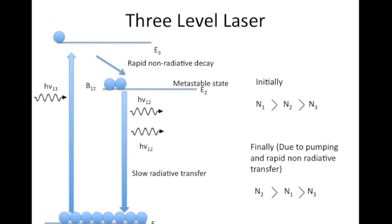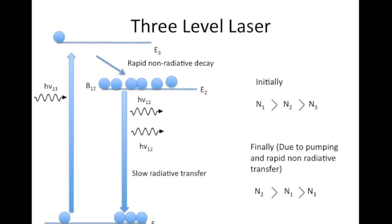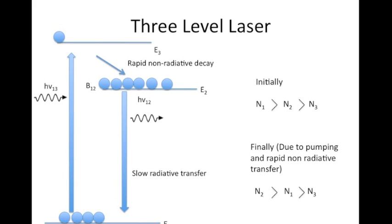We pump atoms from level E1 to level E3 very quickly, and these atoms then decay to the metastable state E2 rapidly by means of non-radiative decay — meaning the energy lost by the atom is not emitted as light but released as thermal energy or other forms of energy. Importantly, population inversion between levels E1 and E3 is never achieved during this process, as we have already proved.